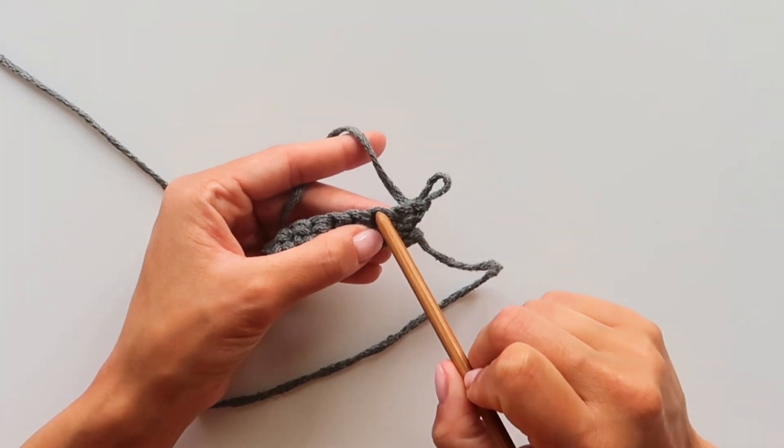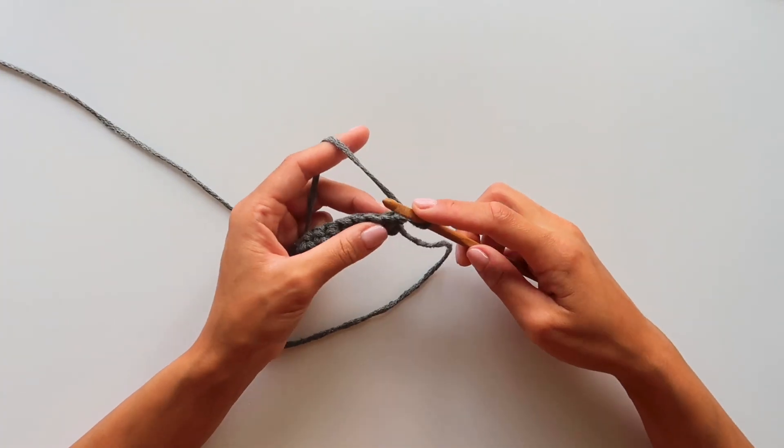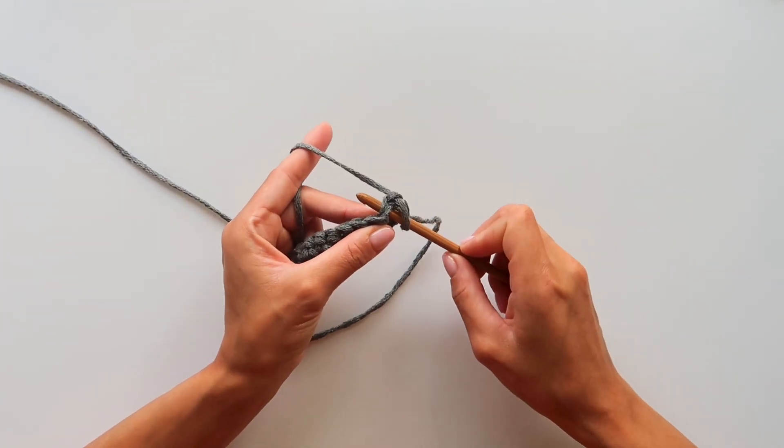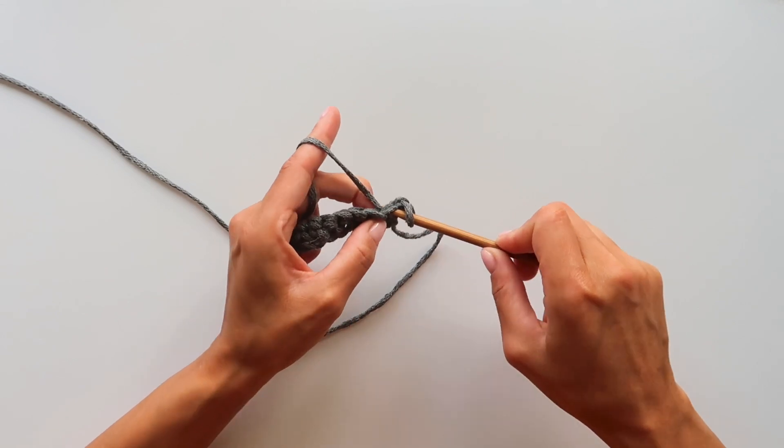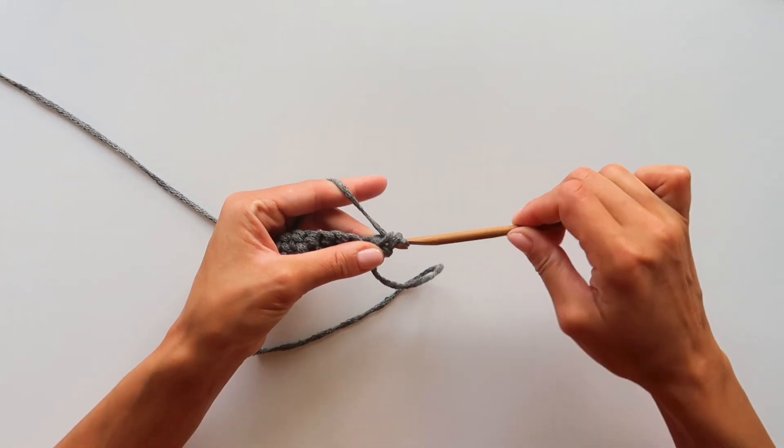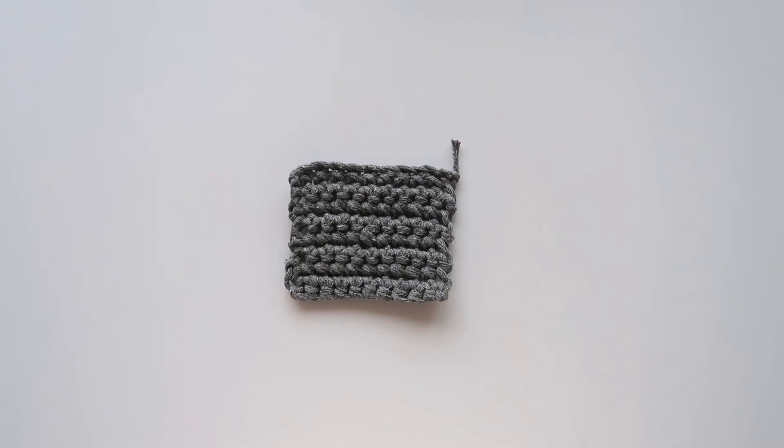So watch carefully where to put the hook in the new row. So not in the turning chain, it will be in the first stitch of the row. Grab yarn and grab yarn again and pull through.